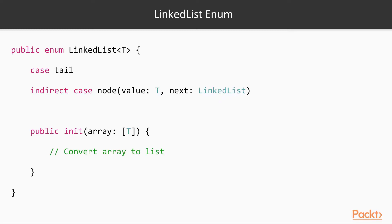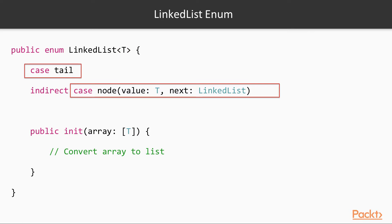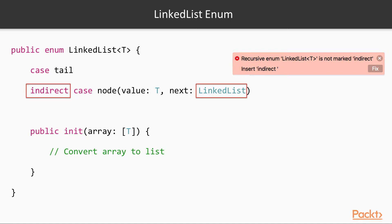There are a few interesting points to this implementation. We want to store data on our list, so of course we want a generic type — here the placeholder is the simple T. A node has an associated value of type T, and we also have a convenience initializer for converting an array of T into a list. A linked list node has two fundamental states: it's either a node with a pointer to the next node, or it's the tail of the list — this lends itself very well to an enum implementation. The node case points to the next node in the list, so it has an associated value of the same type as itself, making LinkedList a recursive enum. In order to support this, we need to add the indirect keyword so the compiler can handle this case — otherwise you get a compiler error: recursive enum is not marked indirect.